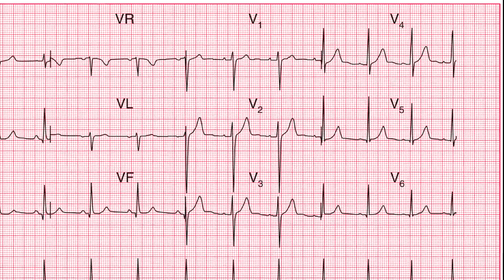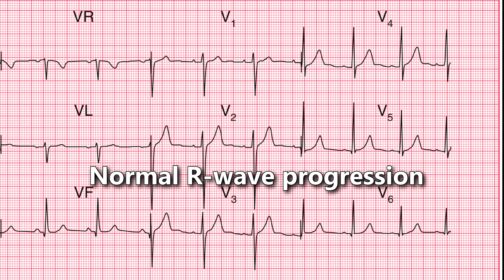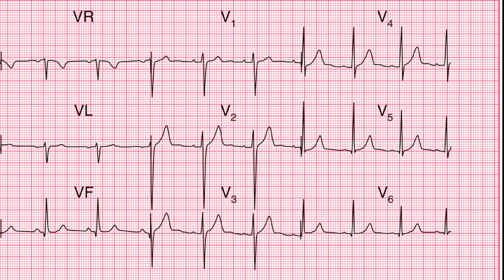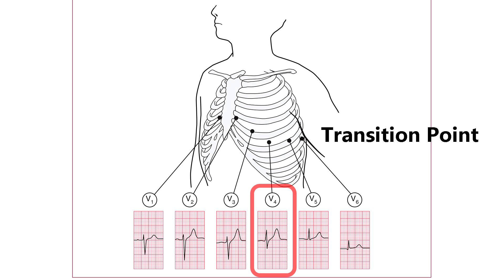Focus on R wave height as we move from leads V1 to V6. You will notice that as we move from V1 to V6, R wave height increases gradually, whereas the depth of S wave decreases gradually. This is called normal R wave progression. The lead in which R and S waves become of equal size is called the transition point. It shows the level of the interventricular septum. Normally, the transition point is at V3 or V4 level.